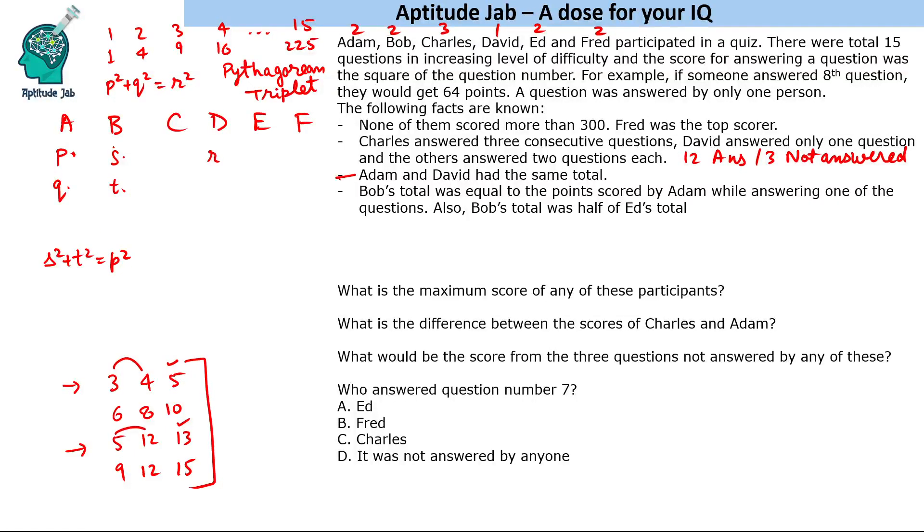So Adam answered questions 5 and 12, giving a total score of 169. David answered question 13, also getting 169. Bob answered questions 3 and 4, getting a total of 25. It is also given that Bob's total was half of Ed's total.